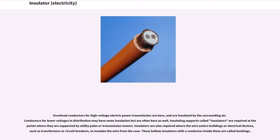Overhead conductors for high-voltage electric power transmission are bare and are insulated by the surrounding air. Conductors for lower voltages may have some insulation but are often bare as well. Insulating supports called insulators are required at the points where they are supported by utility poles or transmission towers. Insulators are also required where the wire enters buildings or electrical devices, such as transformers or circuit breakers. These hollow insulators with a conductor inside them are called bushings.